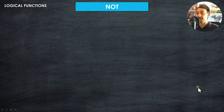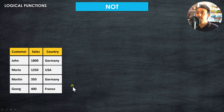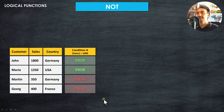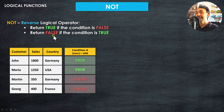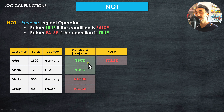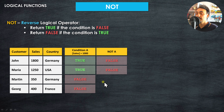Now let's talk about the third operator: NOT. We have a condition where sales is higher than 1000. Unlike AND and OR, the NOT operator does not combine two conditions — instead, it reverses the result of a condition. NOT returns true if the condition result is false, and false if the condition is true. For the first customer the value is true, so NOT gives false. For the second customer as well, NOT gives false.